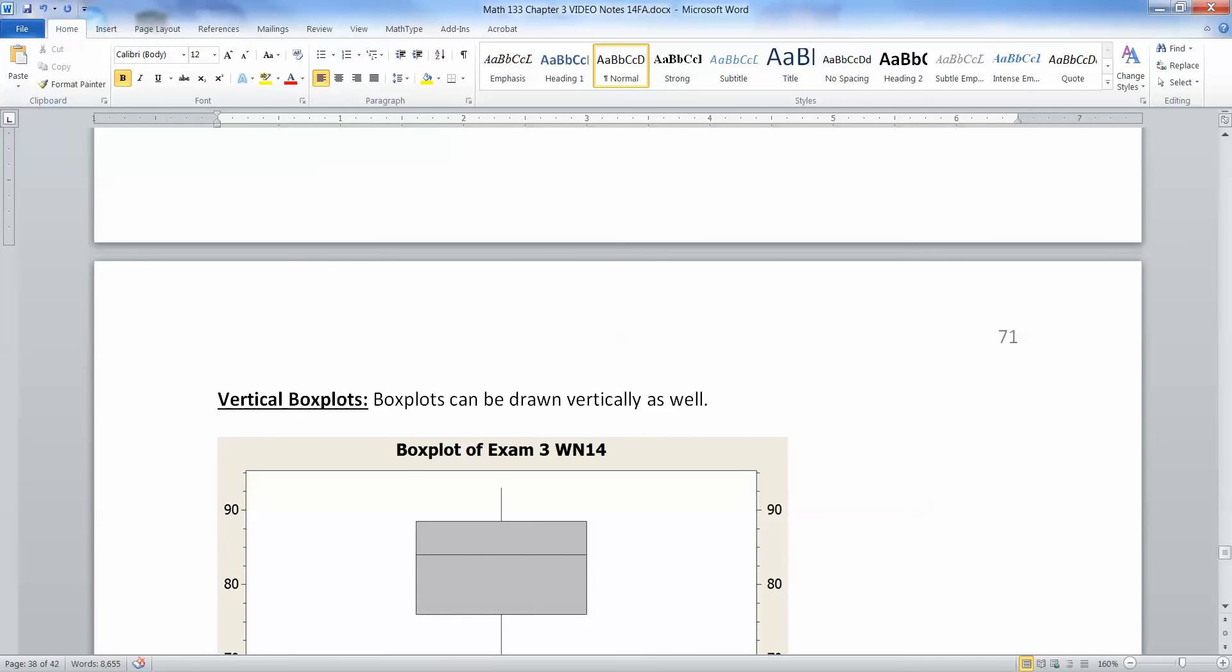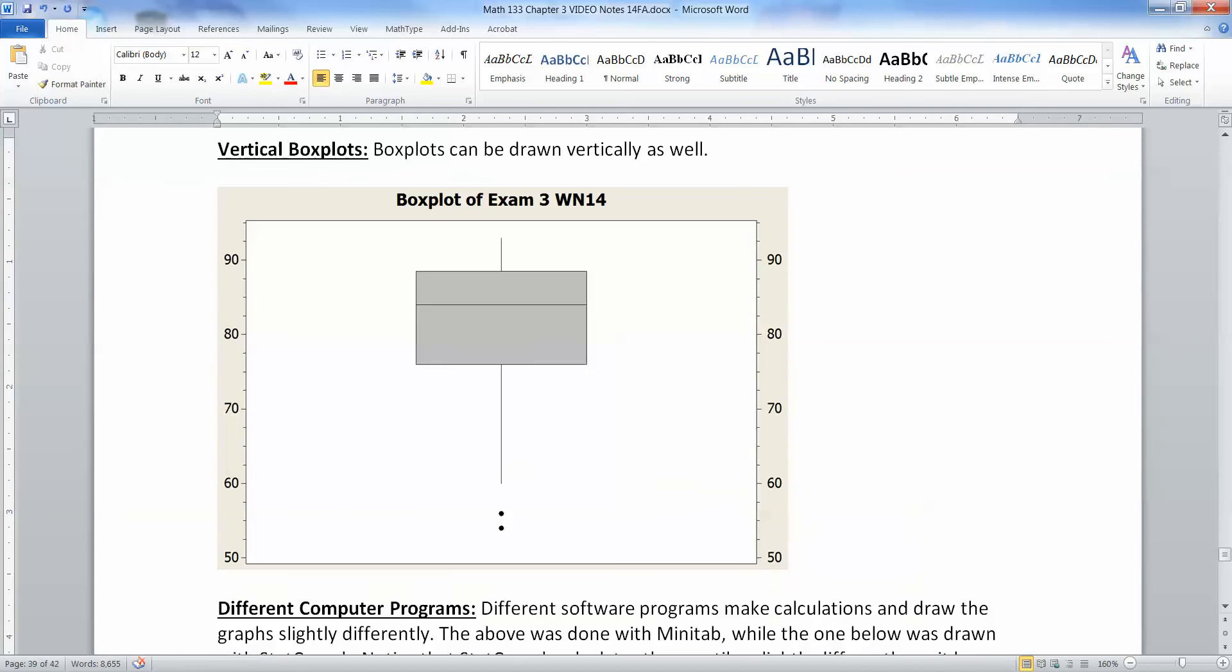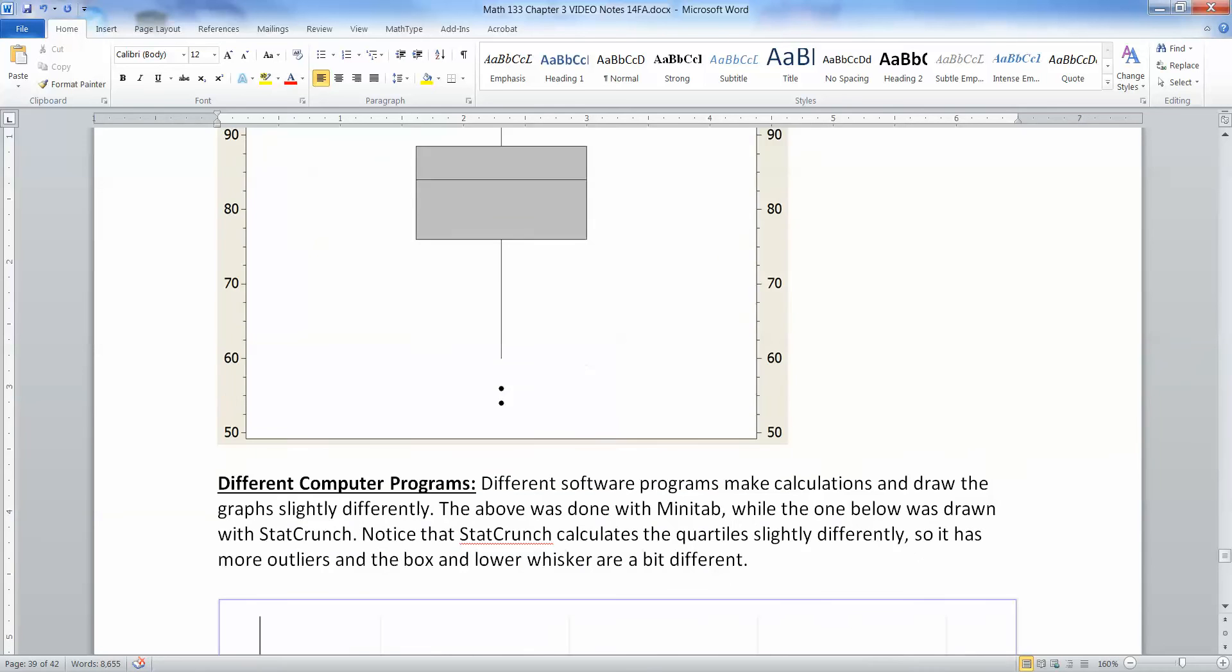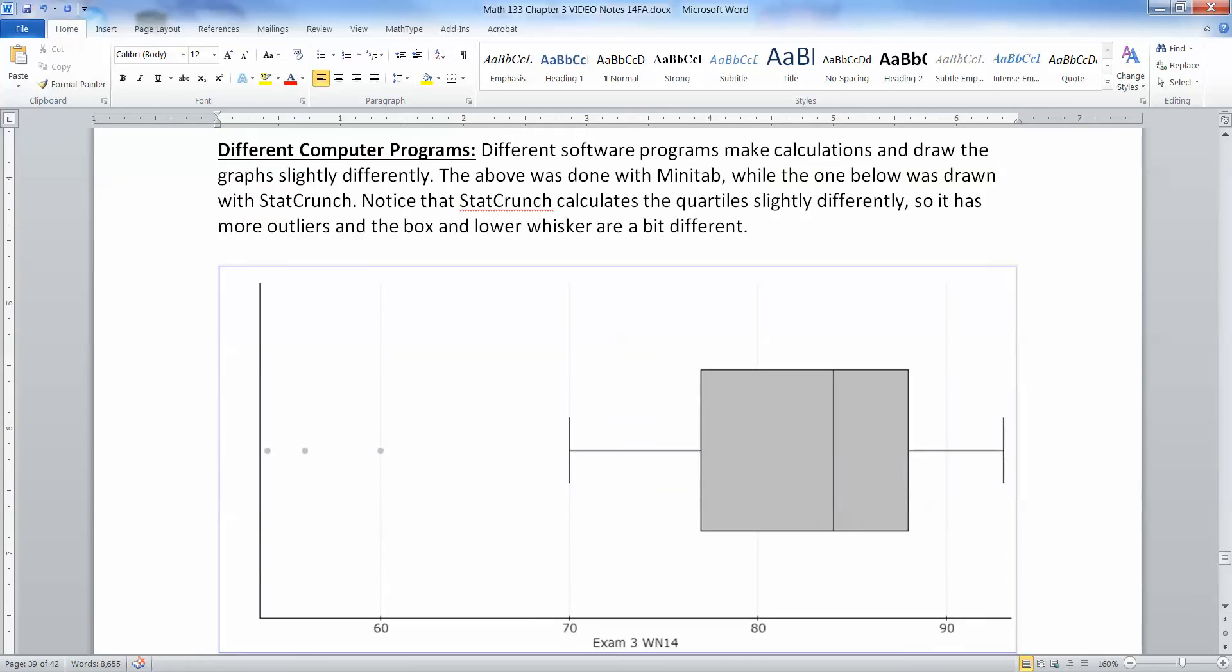Next, just so you know that box plots can be drawn kind of in a variety of ways. So this is the exact same box plot as drawn above, but it's drawn vertically instead of horizontally. That's fine, right? You can still see the outliers right here at 54 and 56. They're 60 right there and so on. And then different programs can draw them slightly differently. And they might use slightly different ways of doing it.